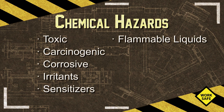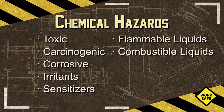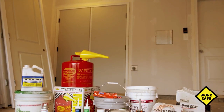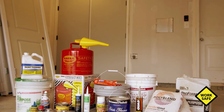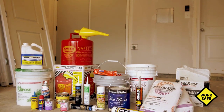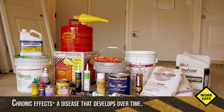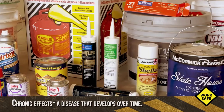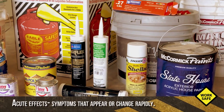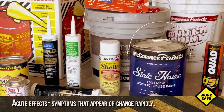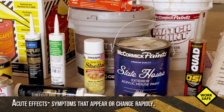There are also flammable liquids that emit vapors that may catch fire, and there are combustible liquids that combust after being exposed to high temperatures. These chemicals may cause physical damage to the body. They can have chronic effects, a disease that develops over time, or acute effects, symptoms that appear or change rapidly.